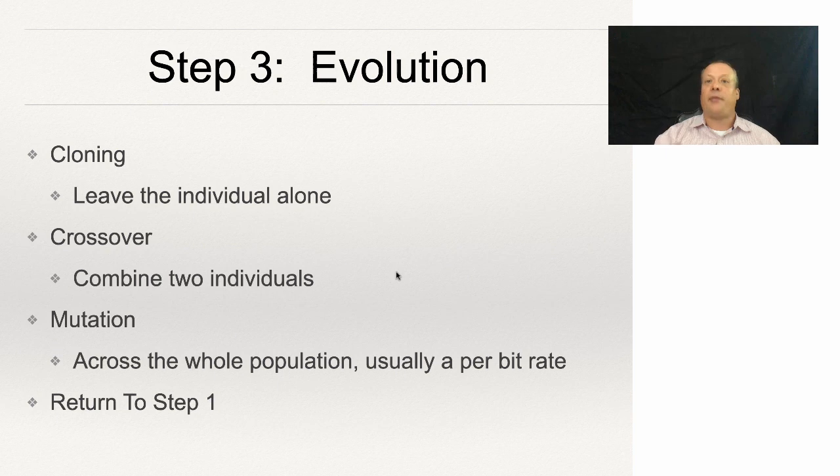Step three is evolution. Now we've selected all the individuals who are going to move over to the next population, but we still have to decide how we're going to move them over. One solution is that we're going to do cloning, which means we're going to leave the individual alone.